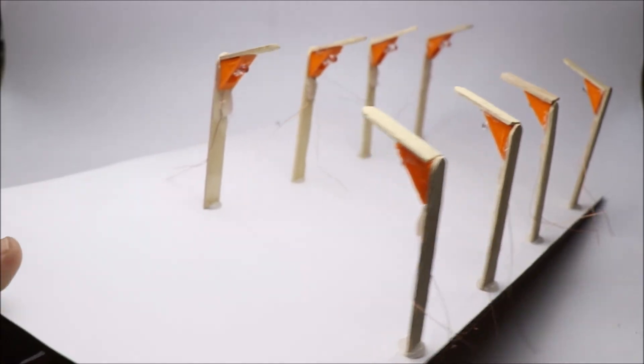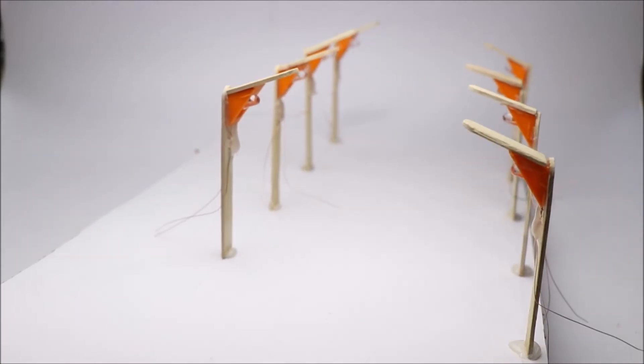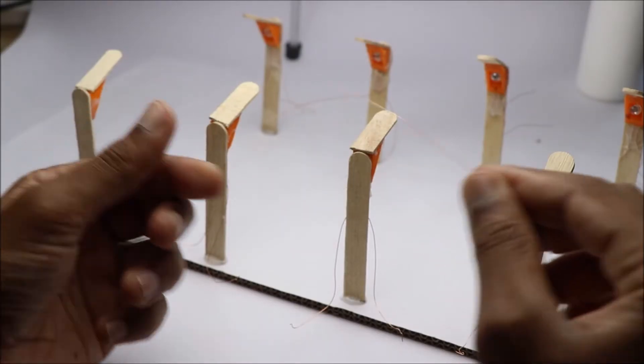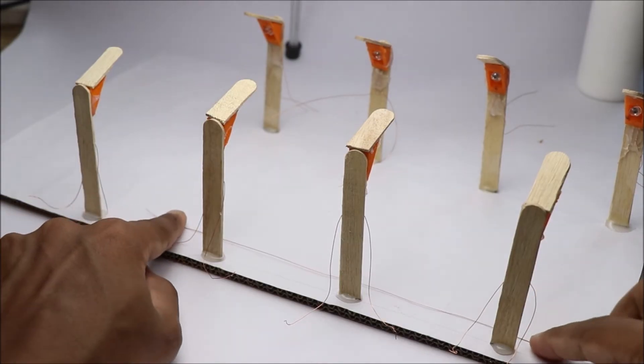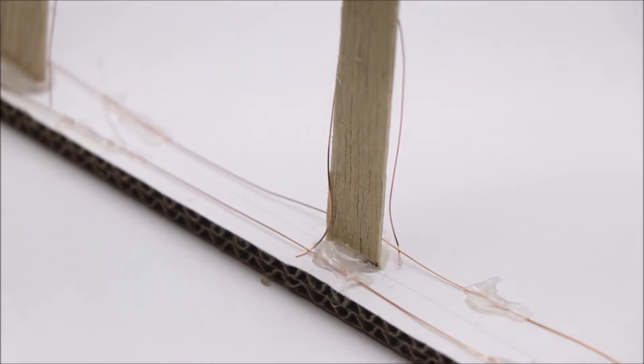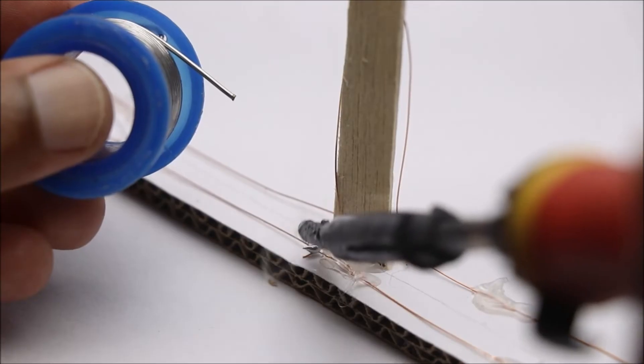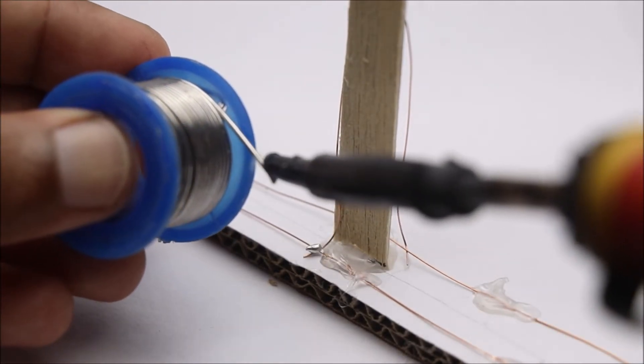Now to connect all these eight street lights together we will use parallel connection method. A long strand of copper wire will connect all the street lights. At the end of the light we should have only two wires. This is easy even though it might look difficult.